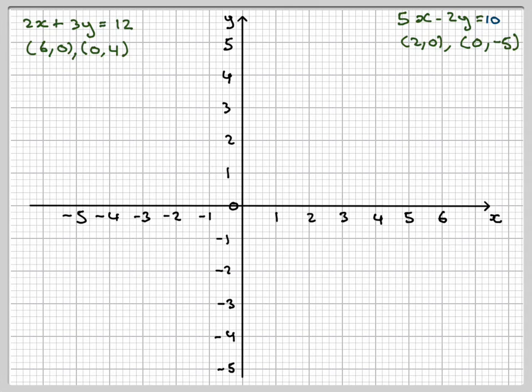So we now plot the point (6, 0), which is there. And the point (0, 4), which is there. We take our ruler and join these two points up very carefully. At one end, we need to label the line. We're going to have two lines on the graph. 2x plus 3y equals 12.